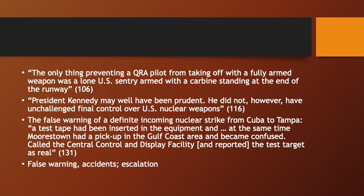Another false warning involved a definite incoming nuclear strike reported from Cuba to Tampa. A test tape had been inserted in the equipment, and at the same time a radar station had a pickup in the Gulf Coast area and became confused, calling the central control and display facility and reporting the test target as real. This apparently real indication of an imminent nuclear attack had the possibility of stimulating a counterattack - yet it came from a test tape. False warnings can lead to accidents and escalation.